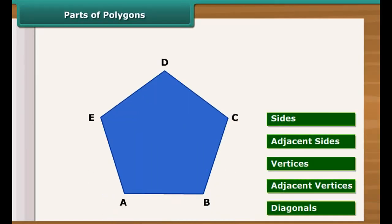The line segments AB, BC, CD, DE and EA form the polygon ABCDE.